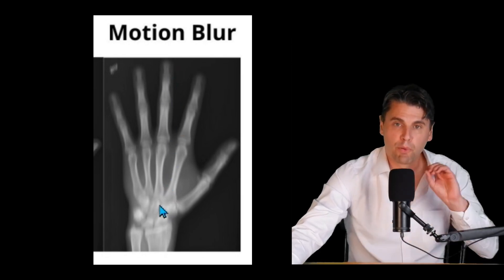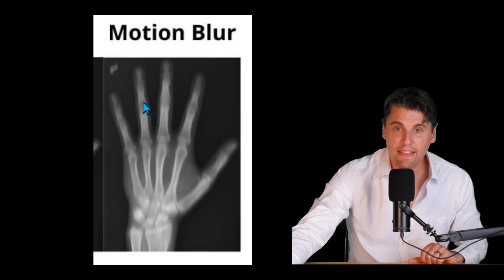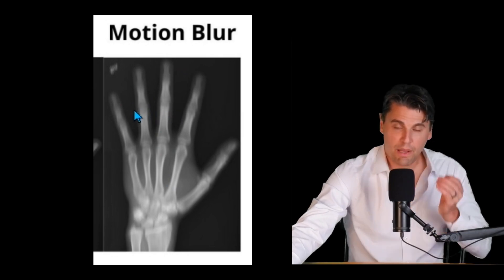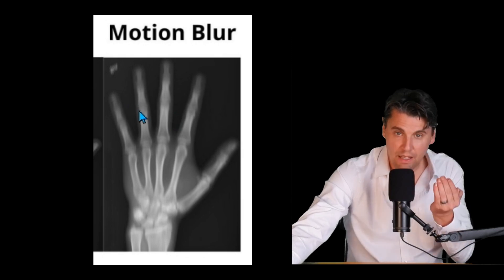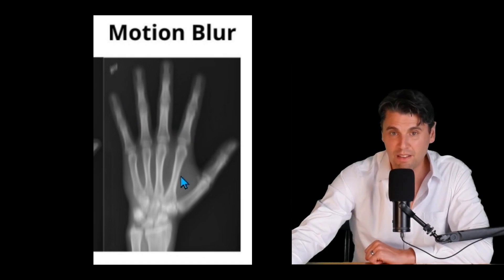And the blurring is going to actually blur out edges. And the edges that are going to get most blurred are those that were in this direction. Because we had the motion, you're actually going to get blurring perpendicular to the direction. You can see that here.